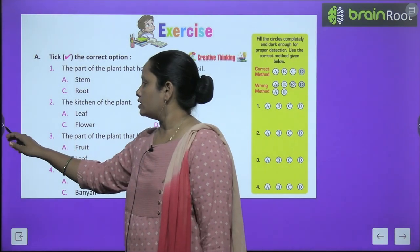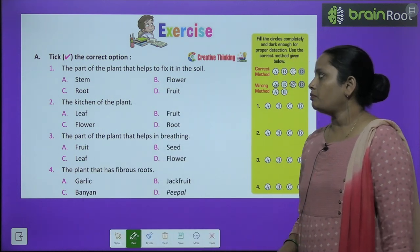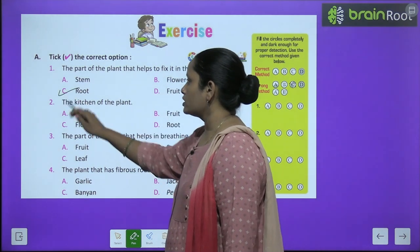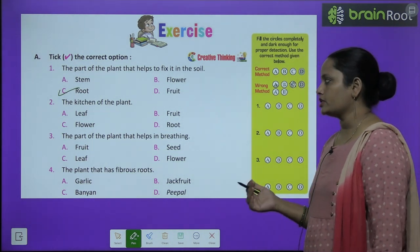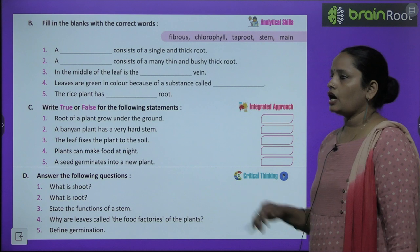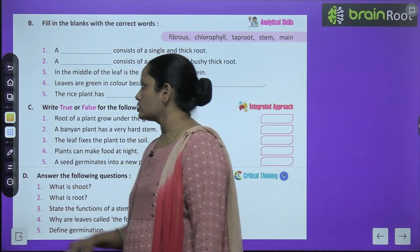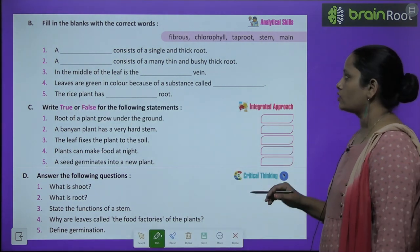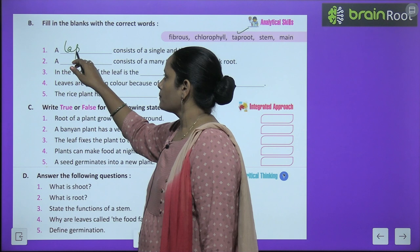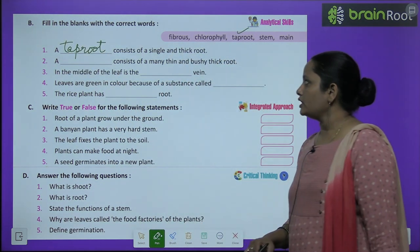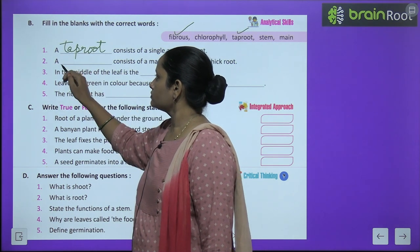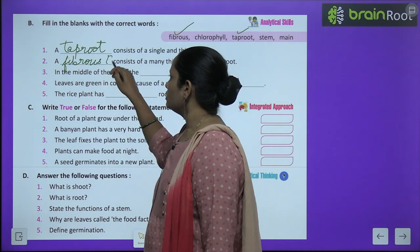Now let's move on to the book exercise. The first exercise is to check the correct option. The part of the plant that helps to fix it in the soil is — stem, flower, root or fruit? It is root. The kitchen of the plant — leaf, fruit, flower or root? It is leaf. Do the rest of the questions yourself. Fill in the blanks: a dash consists of a single and thick root — that is tap root. A dash consists of many thin and bushy roots — that is fibrous root.